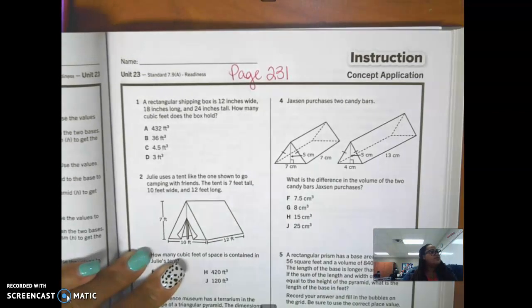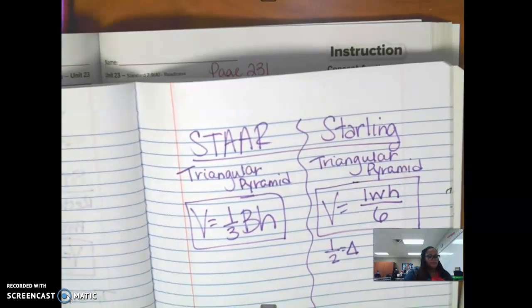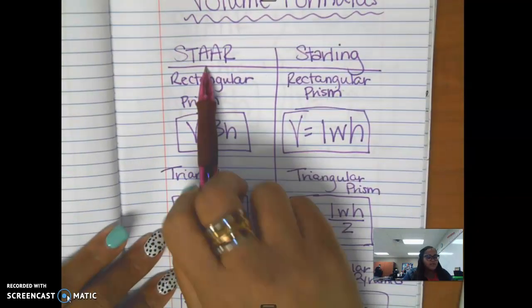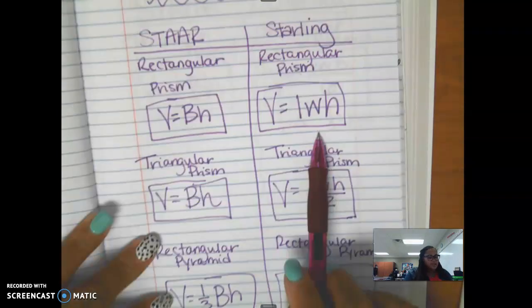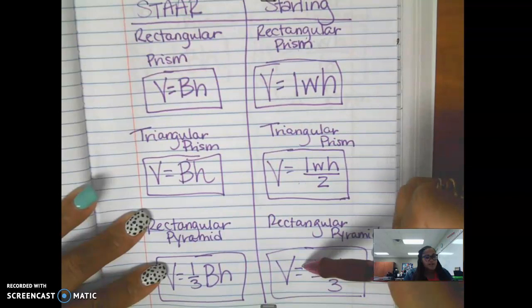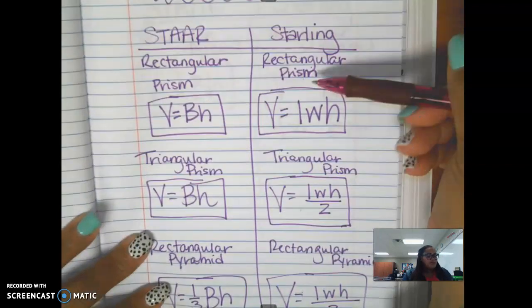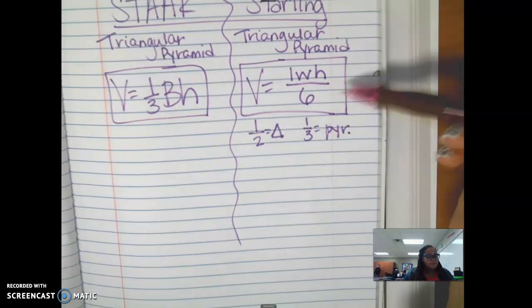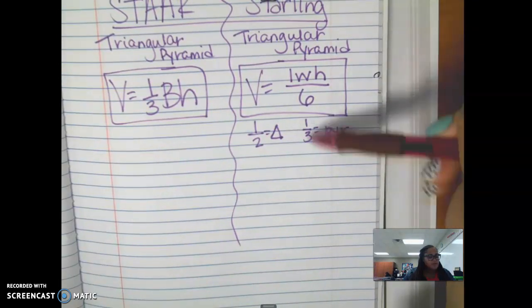Keep in mind the formulas that you should have written from class — the volume formulas. The STAAR reference sheet is going to give you these, but you can also write them down. These will have to be committed to memory because you cannot use extra notes on the STAAR test, though you can use these notes on my test. This covers the rectangular prism, triangular prism, rectangular pyramid, and triangular pyramid — remember: half for a triangle and one-third for a pyramid.